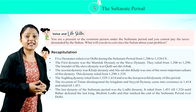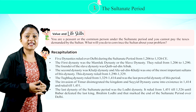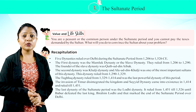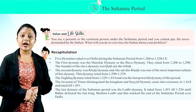Value and life skills: You are a peasant or common person under the Sultanate period and you cannot pay the taxes demanded by the Sultan. What will you do to convince the Sultan about your problem?